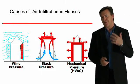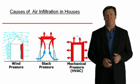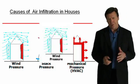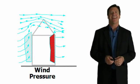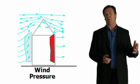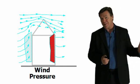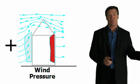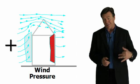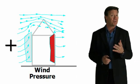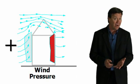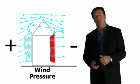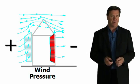Now let's look at the causes of air infiltration and exfiltration in homes. Number one is wind. As wind blows against one side of a structure, it puts it under positive pressure, pushing air into the structure and pushing out the air you've paid to heat and cool. The opposite side of the building will be under negative pressure.